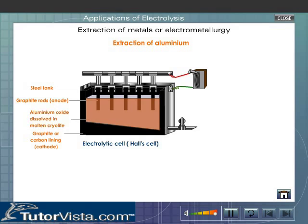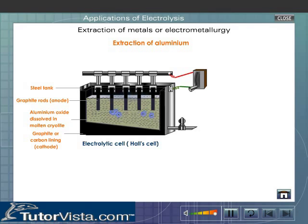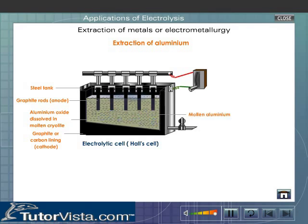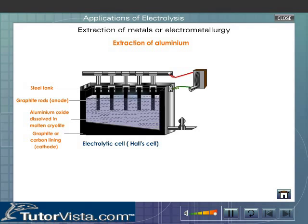Electricity is passed through and electrolysis begins. At the cathode, the aluminium ions receive electrons to become atoms. At the anode, the oxide ions lose electrons to become oxygen molecules. Pure metallic aluminium is tapped from the outlet.